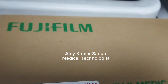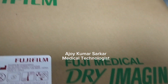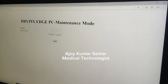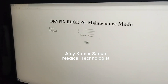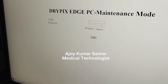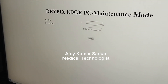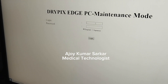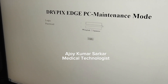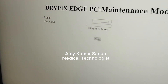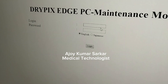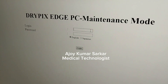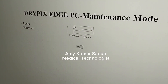Here is the film packet — Fujifilm Dry Imaging. Here is the maintenance mode page for the DryPix S printer. I am entering the login code which I got from the Fujifilm authority — a one-time OTP. The code is 101.